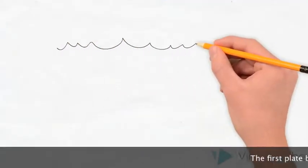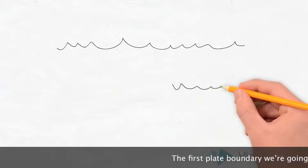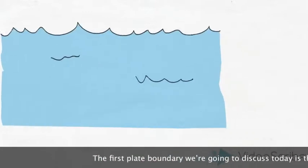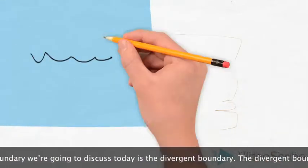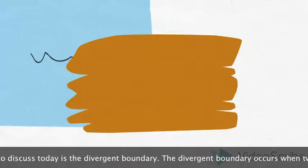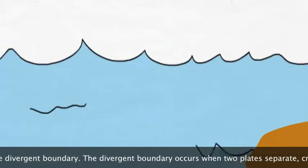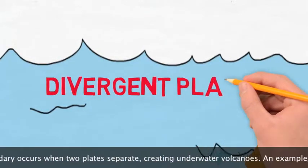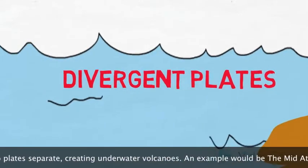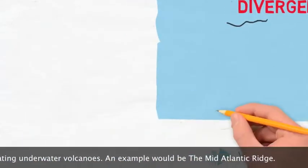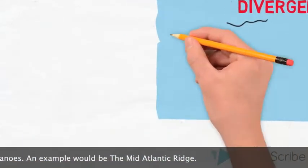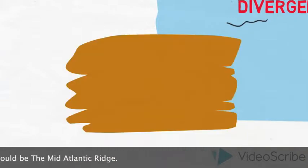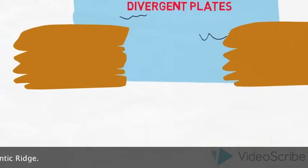The first plate boundary we are going to discuss is the divergent boundary. The divergent boundary occurs when two plates separate, creating underwater volcanoes. An example would be the Mid-Atlantic Ridge.